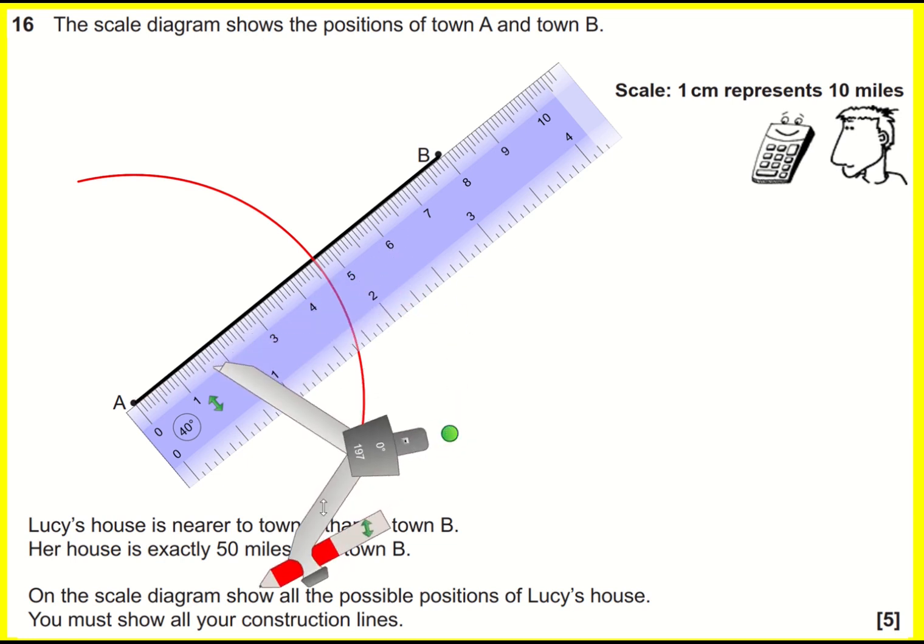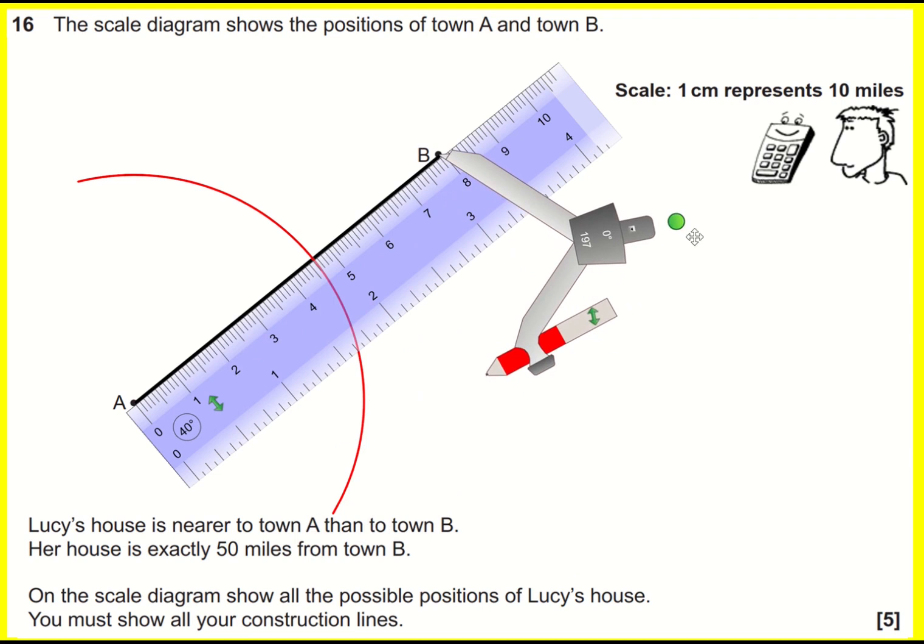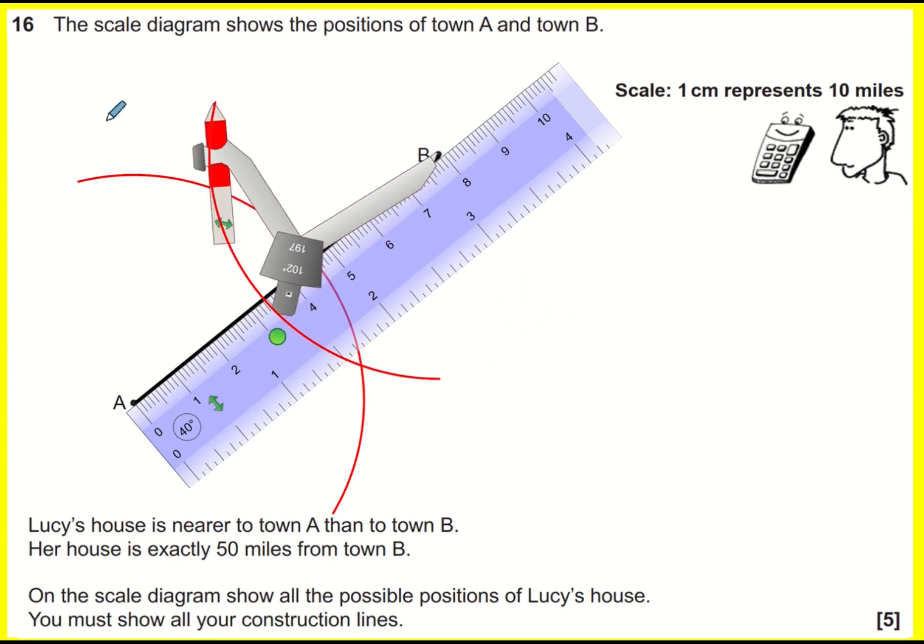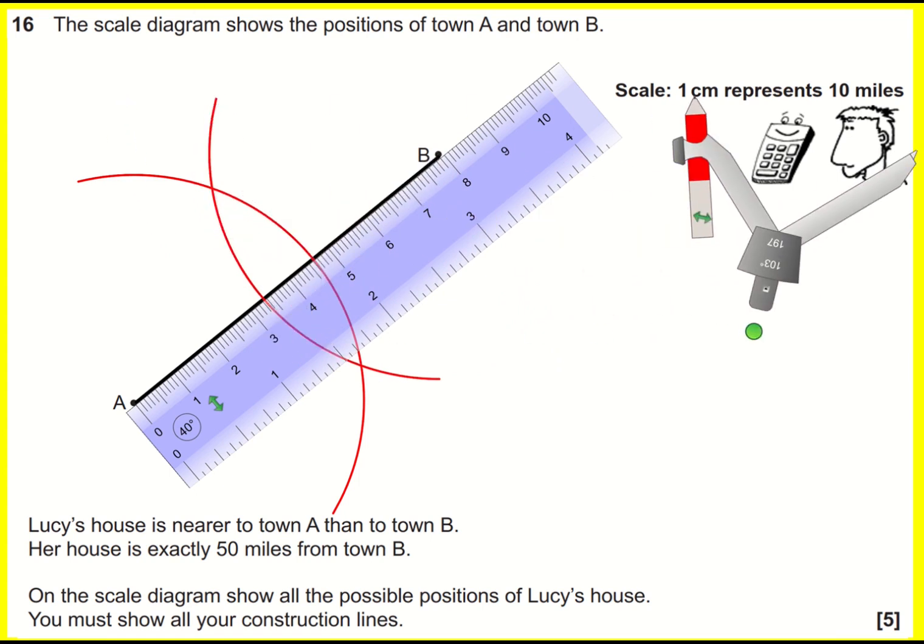Now we keep the width of the compass exactly the same, and move the point onto B, and then do exactly the same again. Draw an arc. Now these points are exactly the same distance away from B. There's a really important point where they meet, or two points in fact, here and here. These are the same distance away from A as B. They must be.